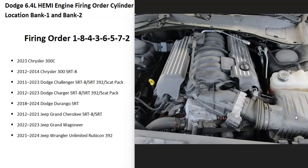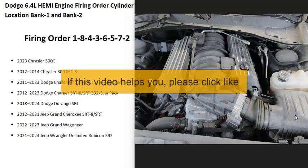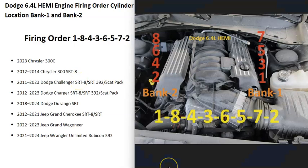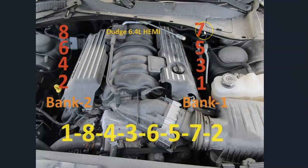Hello all. If you have a Dodge 6.4 liter Hemi engine, I thought I'd real quickly go over what the firing order is, the cylinder locations, and which side of the engine is bank one and bank two. This is going to include several Dodge and Chrysler vehicles. To show what's going on, I made up this diagram. If you need this diagram, you need to save it — I'll put a link down below for where you can go and get it, so just check the description box below.